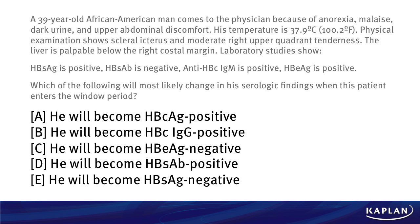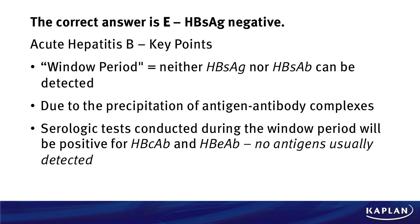The correct answer is choice E — HBS antigen negative. Some key points about acute hepatitis B: the window period is defined as when neither the HBS antigen nor the HBS antibody can be detected. Why? Because there is a precipitation of antigen-antibody complexes. The antigens bind to the antibodies and the blood is able to remove them during this window period — it's a cool phenomenon. Serologic tests during the window period will stay positive for HBC antibody and HBE antibody, but antigens are rarely detected.